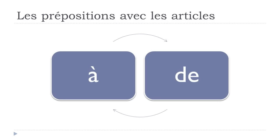We'll see first the indefinite articles — les articles indéfinis: un, une, des. And after that we'll see les articles définis: le, la, les. We'll concentrate especially on the way these prepositions react when they are combined with these articles.